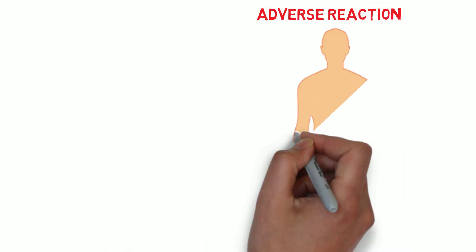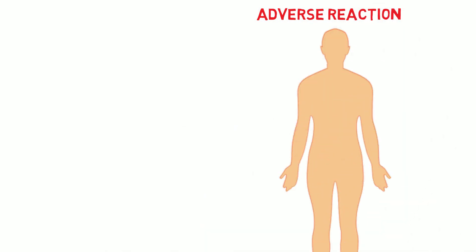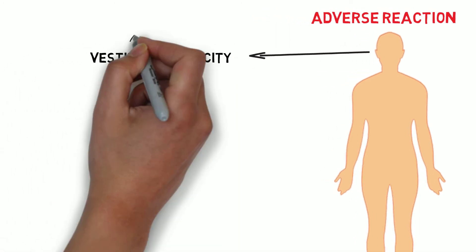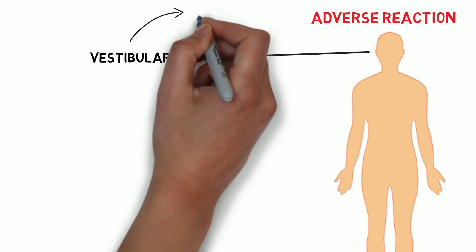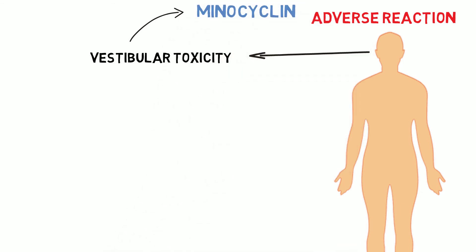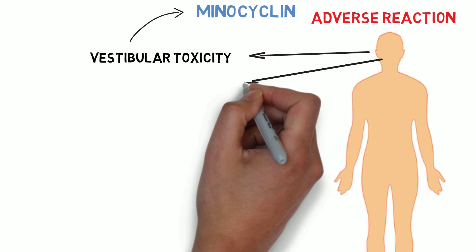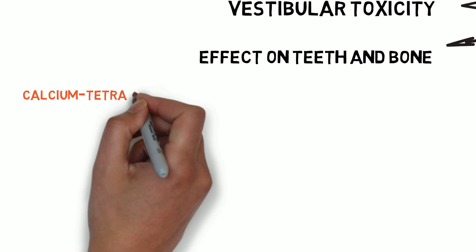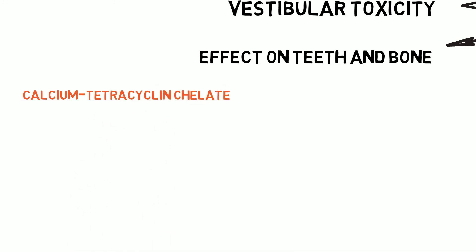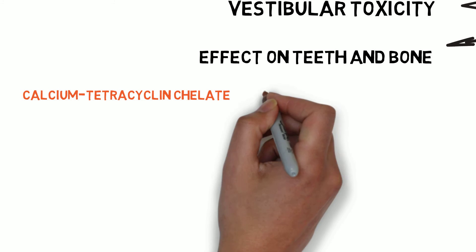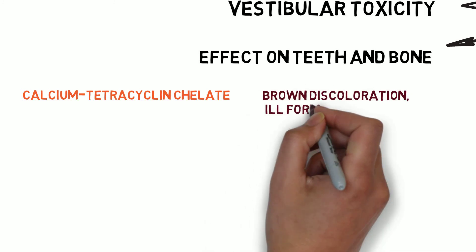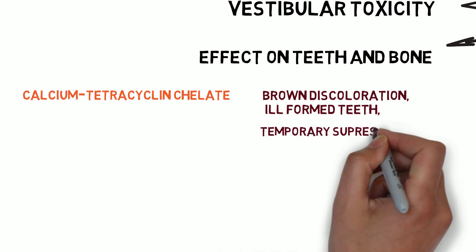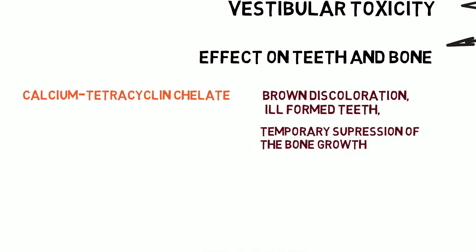Let's talk about adverse effects of tetracycline from the topmost part of the body downward. Tetracycline causes vestibular toxicity, mainly minocycline, which accumulates in the endolymph. It also affects teeth and bone — tetracycline forms a calcium-tetracycline chelate which accumulates in bones and teeth, causing brown discoloration, ill-formed teeth, and temporary suppression of bone growth.